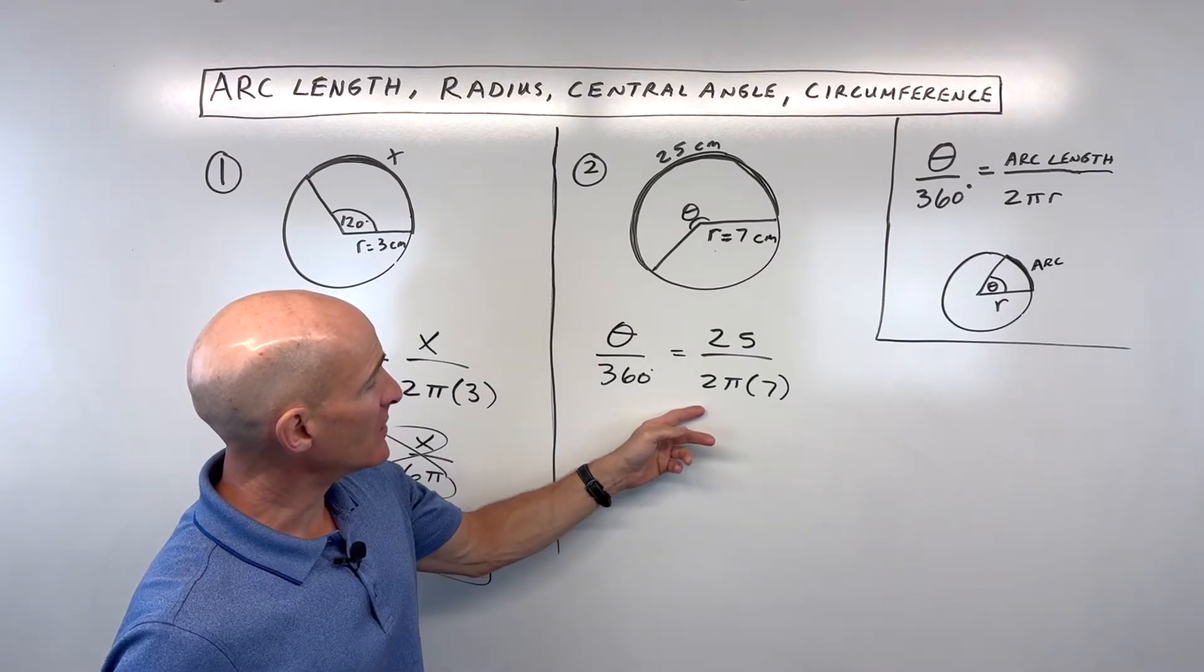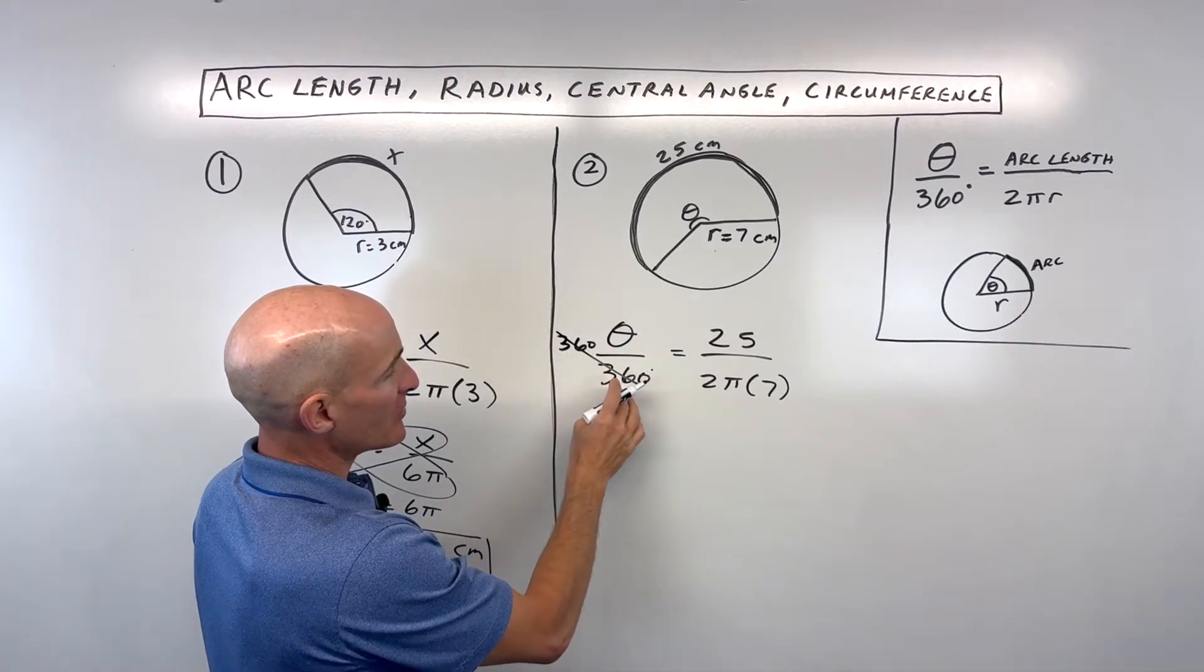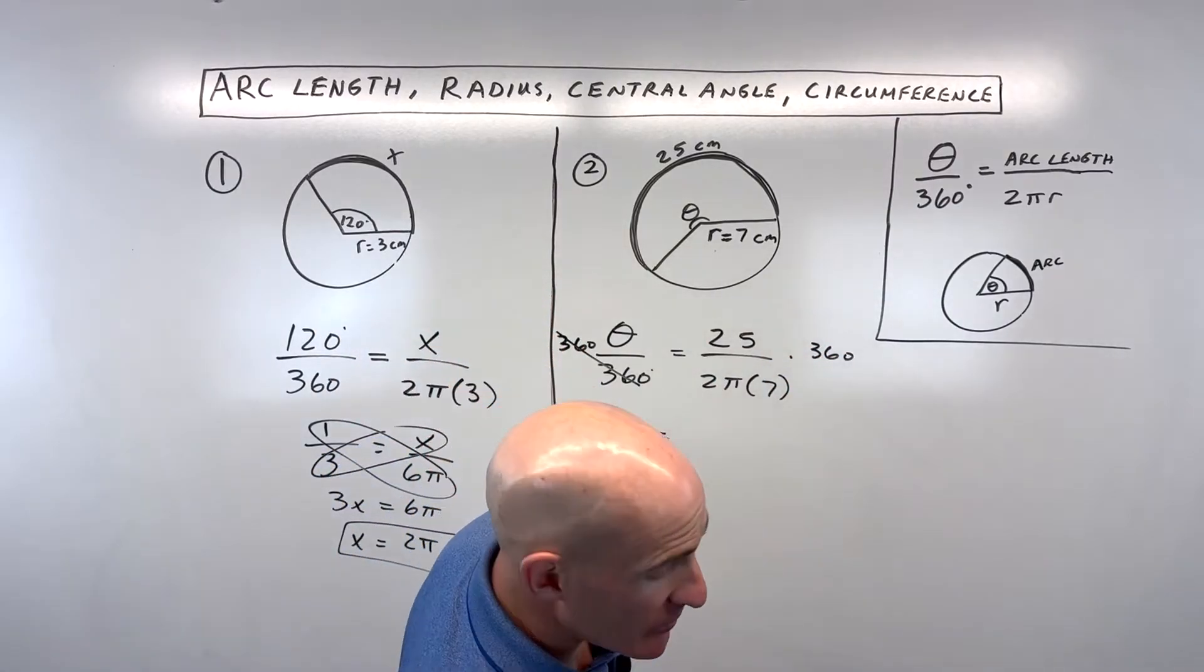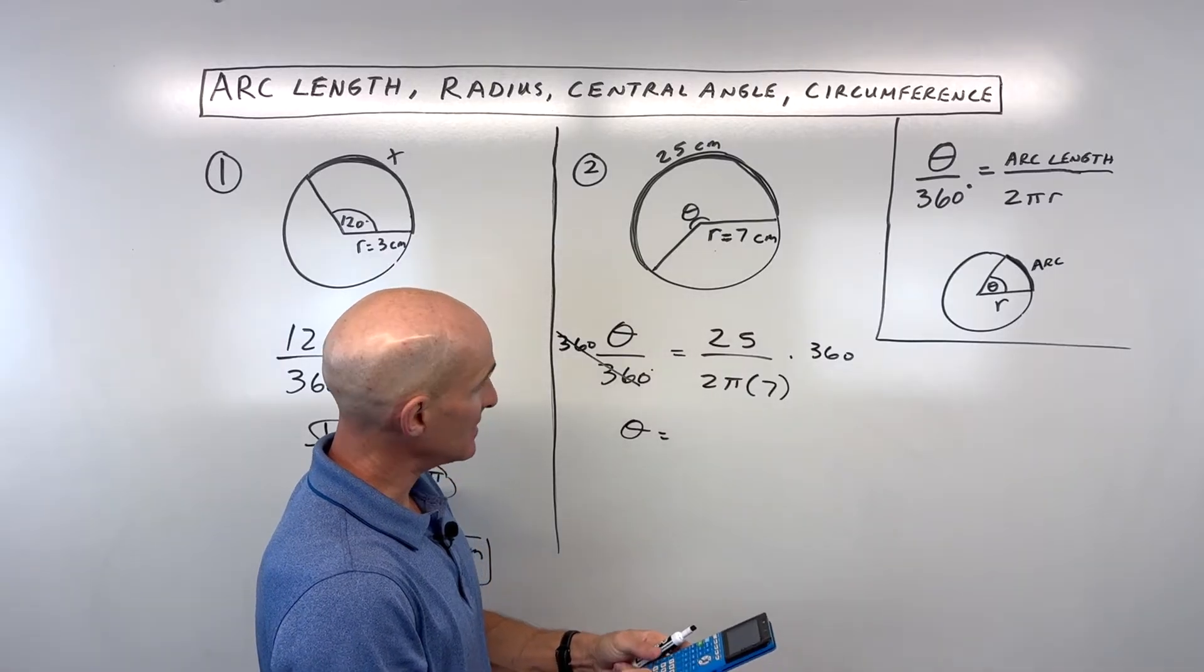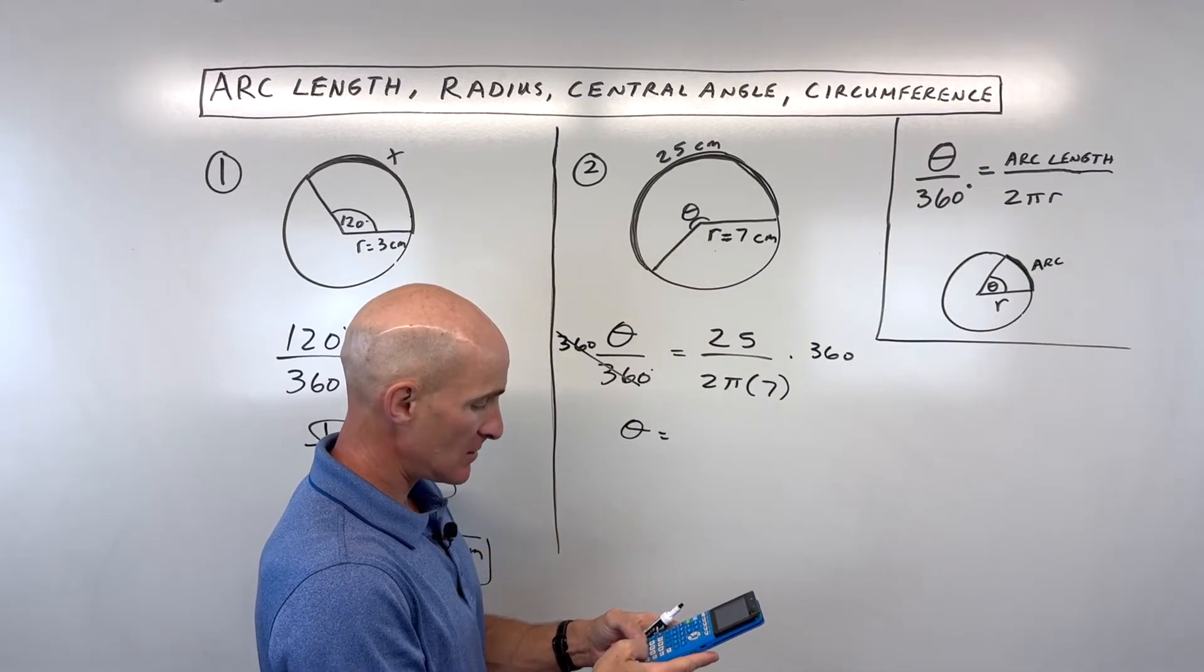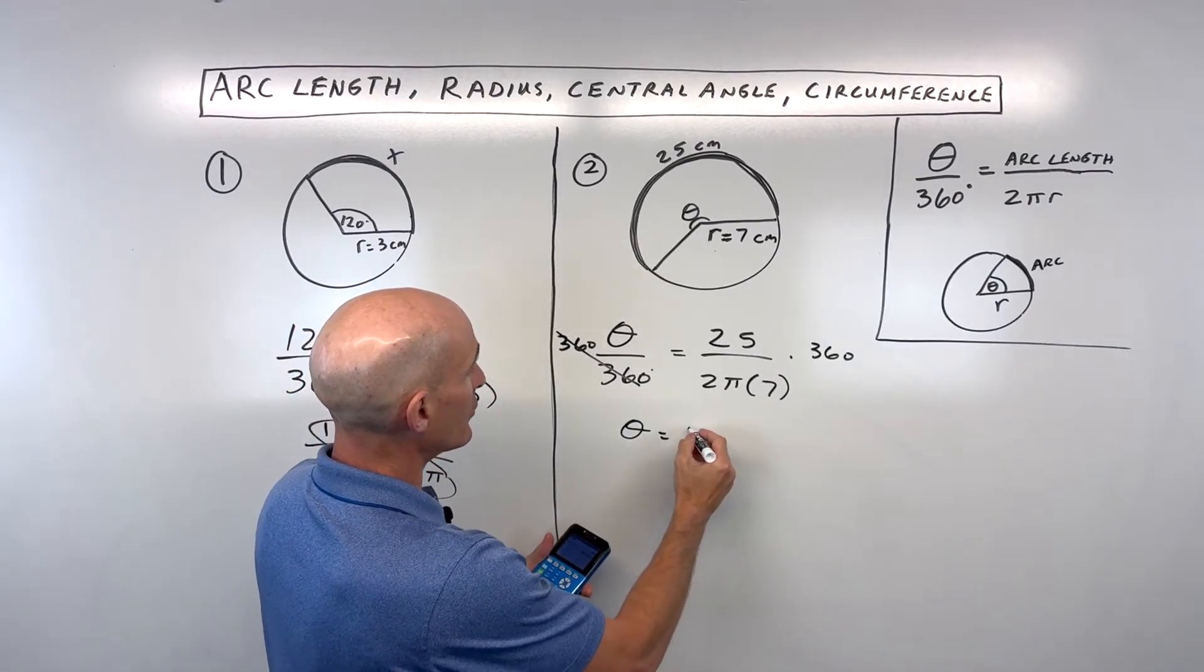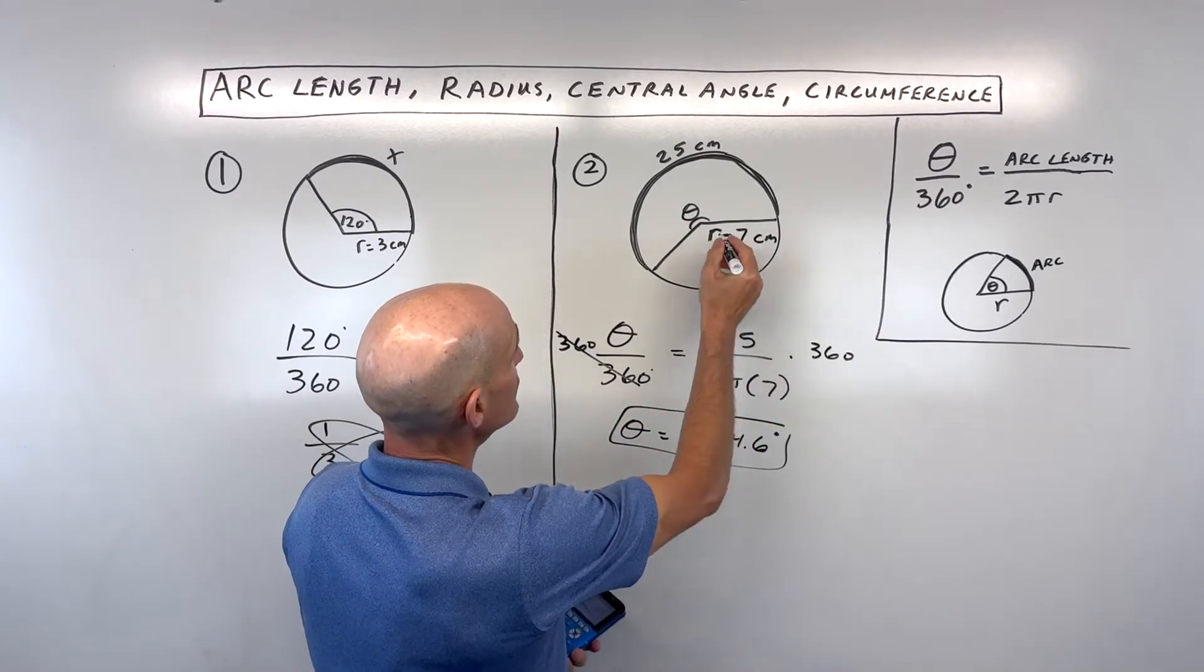What we can do is multiply both sides by 360, because multiplying and dividing the inverses will give us theta by itself. If we do that to the left, we have to do that to the right. This one I'm going to do on the calculator. So we've got 25 times 360 divided by, in parentheses, 14π, and I'm getting 204.6. I'll round a little bit, so this central angle is 204.6 degrees.